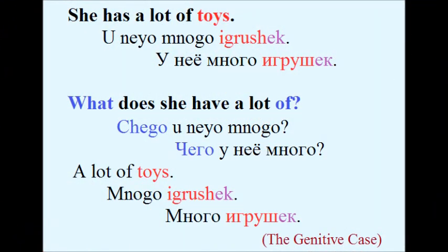Let's look at a sentence with the word 'toy' — игрушка — in another case. She has a lot of toys. У нее много игрушек. Here we see the noun игрушек with the ending -ек, a plural form. The question is: what does she have a lot of? Чего у нее много? A lot of toys — у нее много игрушек. We know that the genitive case uses questions like 'of what' and 'of whom,' so our noun игрушек is used in the genitive case.